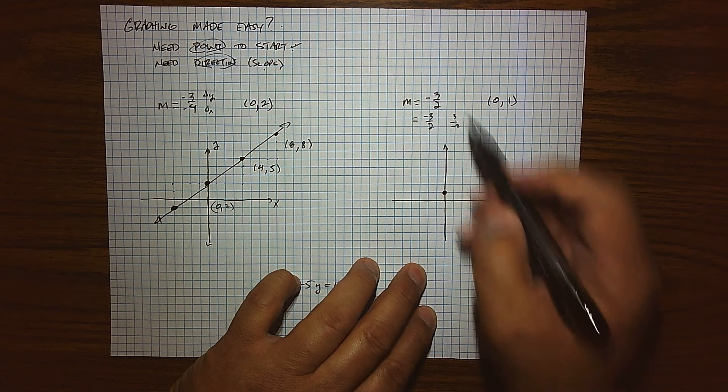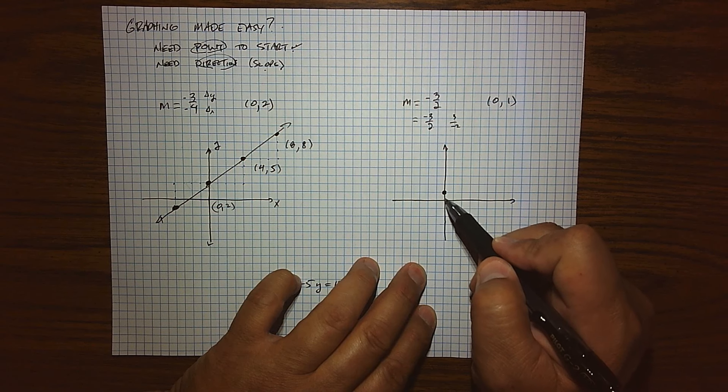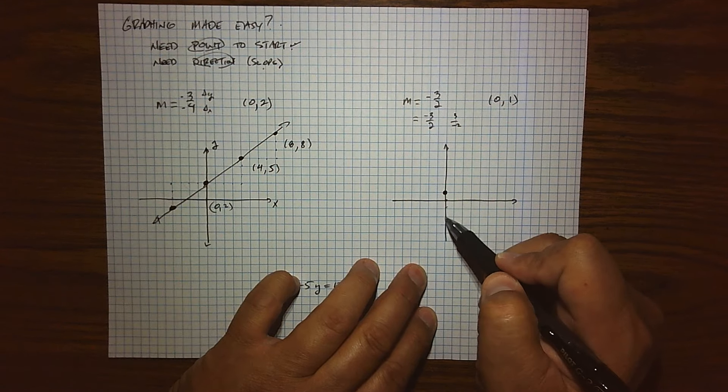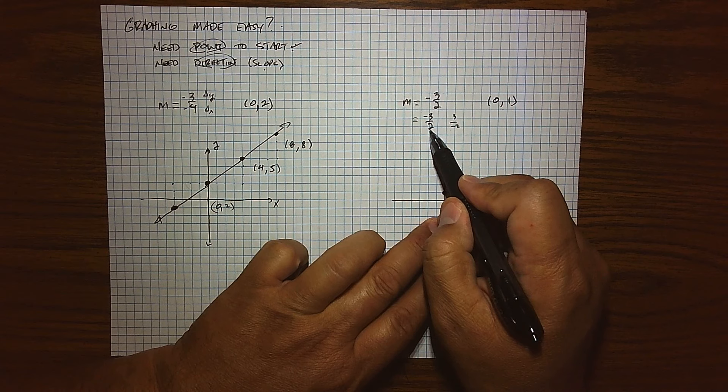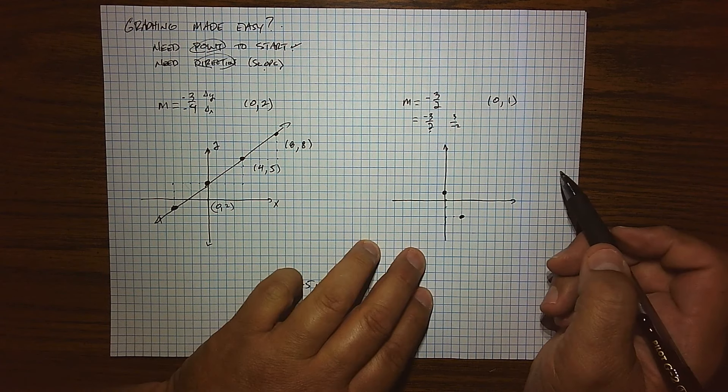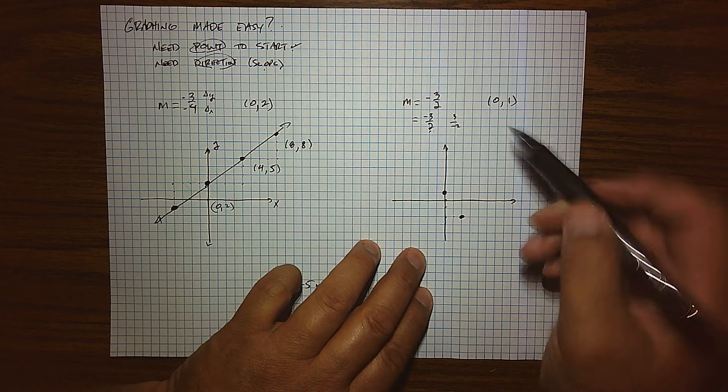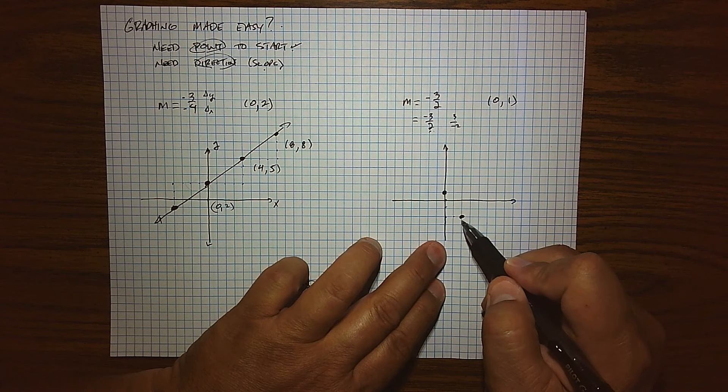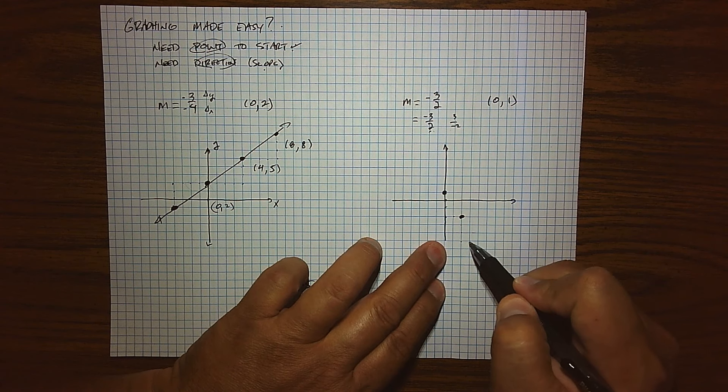Well, if I use it this way, my change in Y is dropping down 1, 2, 3. And my change in X is positive, so I'm moving over 1, 2. So there would be another data point based off of that movement. We can keep going in that direction. 1, 2, 3 down, 1, 2 over.